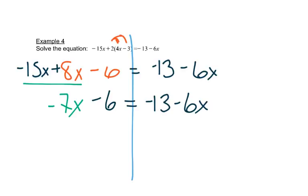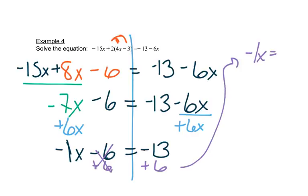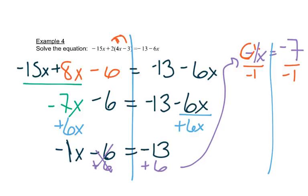Now I'm ready to move my terms with letters to the left. This is a minus 6x, so I'm going to add 6x to both sides. That leaves me with negative 1x minus 6 equals negative 13. Then I'll add 6 to both sides, leaving me with negative 1x equals negative 7. I need to divide both sides by negative 1. We're essentially changing the sign on both sides, so we just get x equals 7.